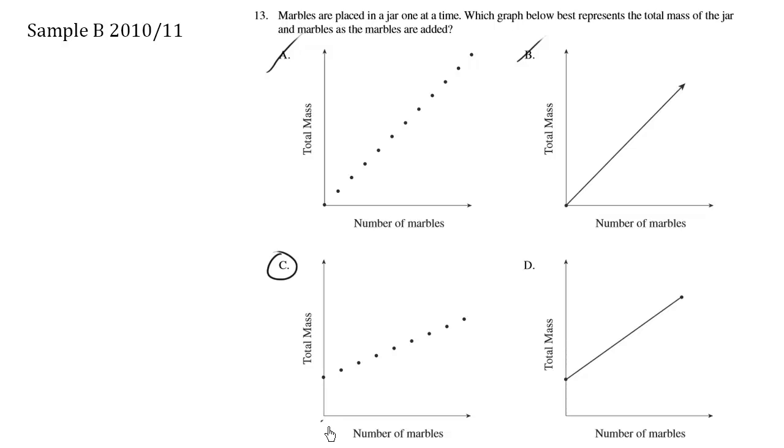The dots represent discrete values: zero marbles, one marble, two marbles. In contrast, the solid line would imply you could have 1.5 marbles, which isn't possible.